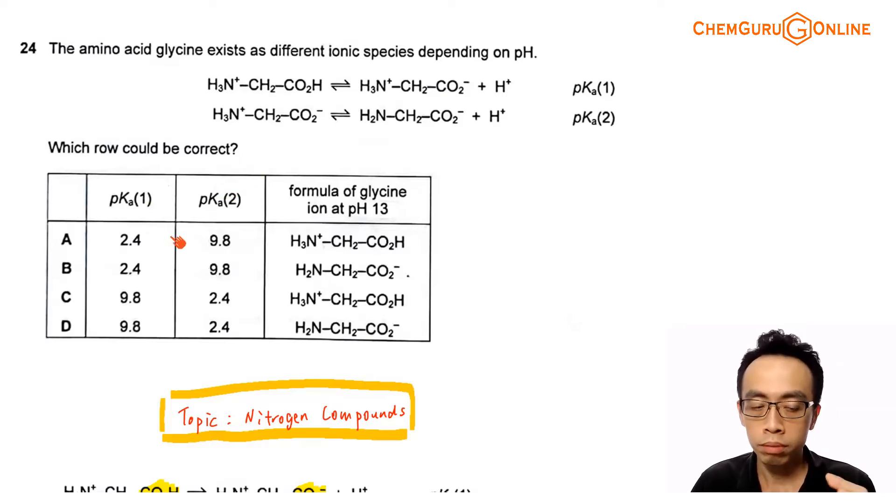We have two to choose from: 2.4 and 9.8. We want to determine which pKa value is smaller, which is larger, and we also want to determine the formula of glycine ion at pH 13. The topic tested in this question is under nitrogen compound targeting amino acids.